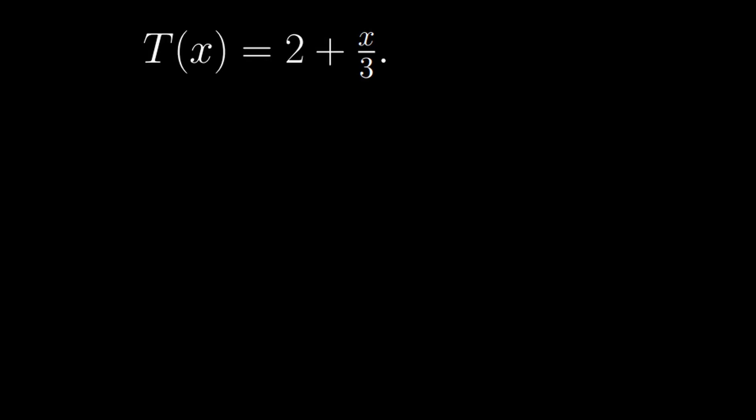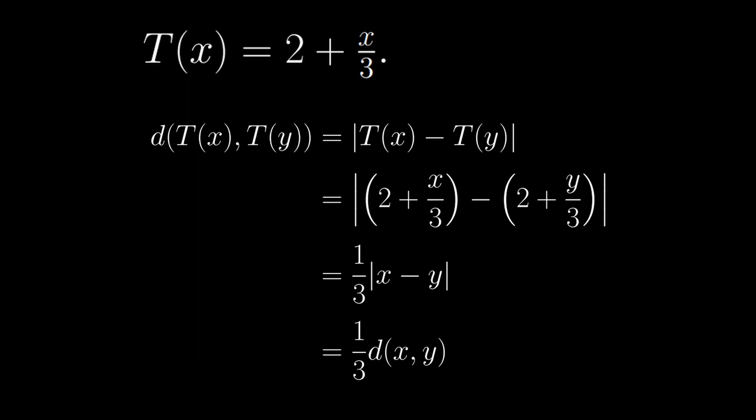Let's look at an example. Define t of x equals 2 plus x over 3. For a pair of points x and y, the distance between t of x and t of y is the absolute value of x minus y over 3, which is less than the distance between x and y by a factor of a third.